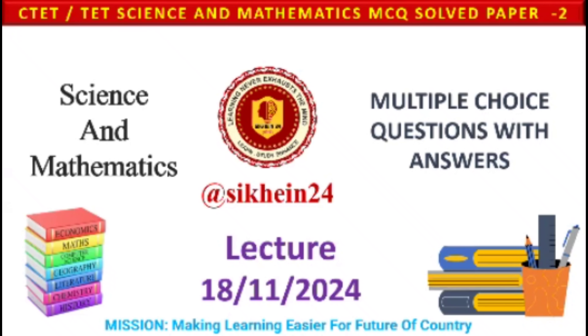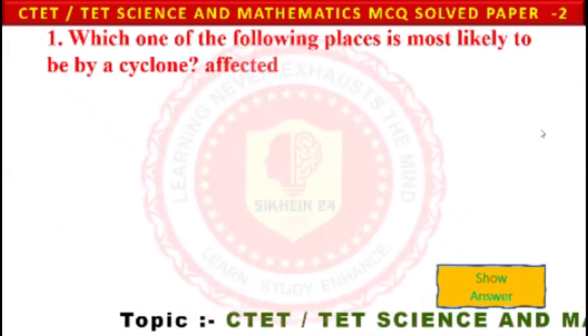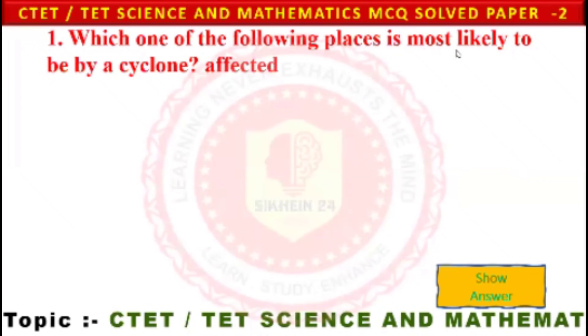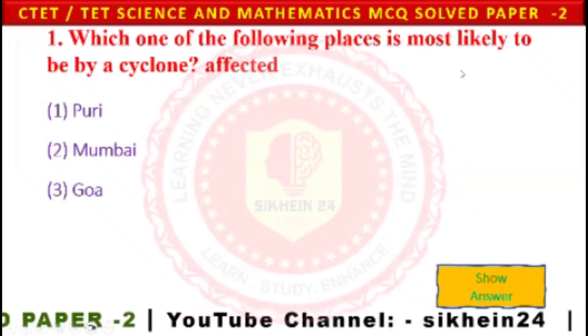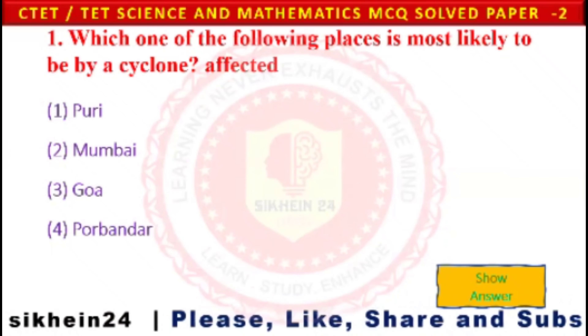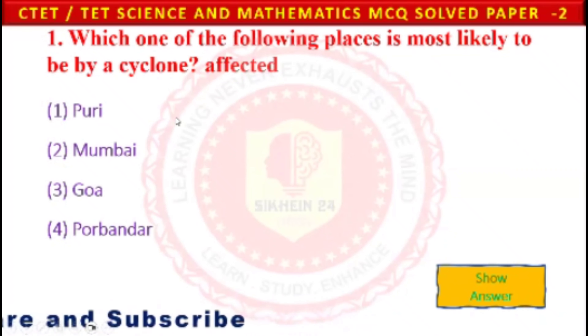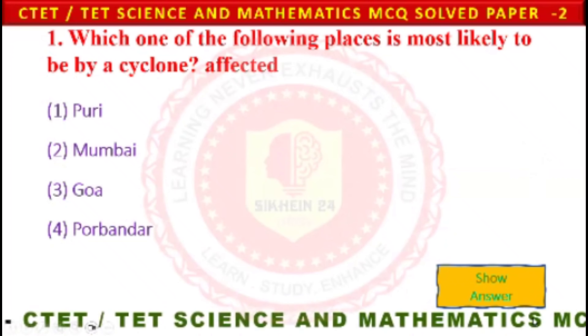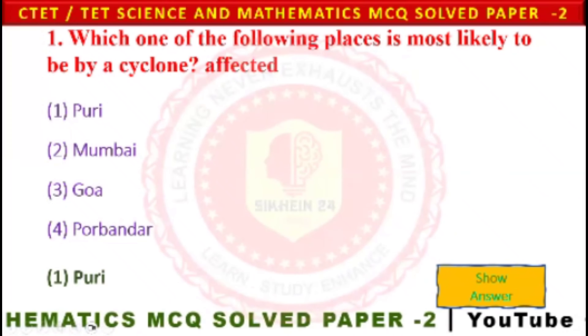First question on your screen: which one of the following places is most likely to be affected by a cyclone? Turi, Mumbai, Goa, and Bandar. Bandar is a coastal area and the most likely cyclone-affected area. Turi is the appropriate answer of this question.